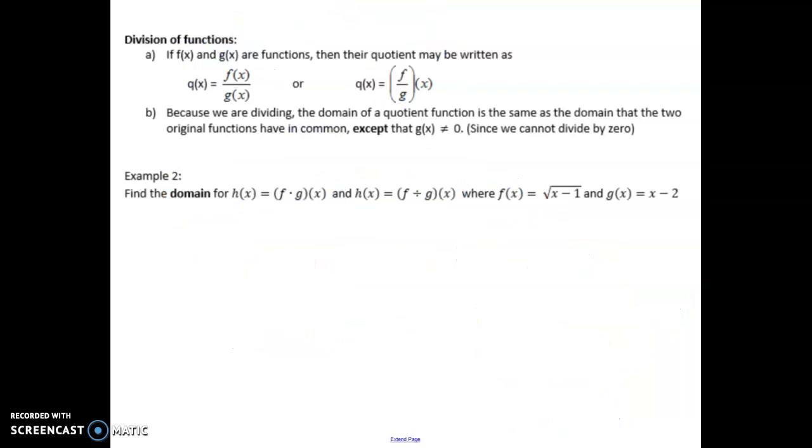So here we're looking at division now. We've got f and g are functions, so you can write it in two different ways. But here the domain part's a little different. Because we're dividing, the domain of a quotient function is the same as the domain of the two original functions have in common, except that g cannot equal 0. So that's an important part. Since we cannot divide by 0, we cannot have the denominator equal to 0.